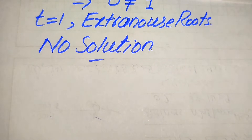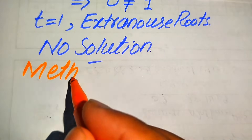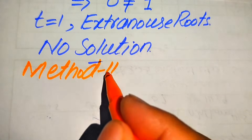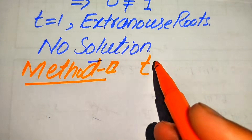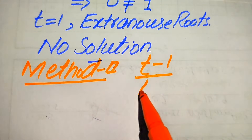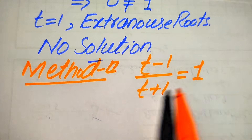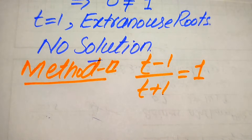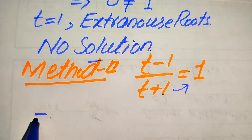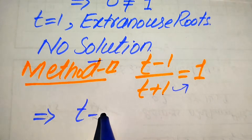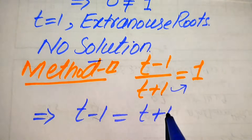Now we solve this problem using the second method. The given equation is (t - 1)/(t + 1) = 1. In the second method, we move (t + 1) to the right-hand side, giving us t - 1 = t + 1.